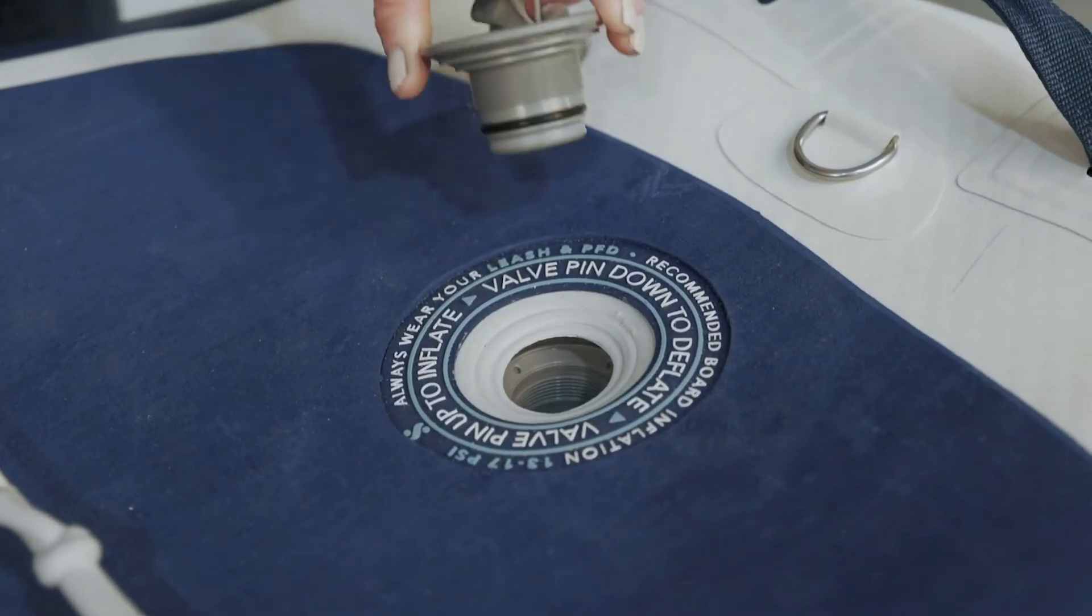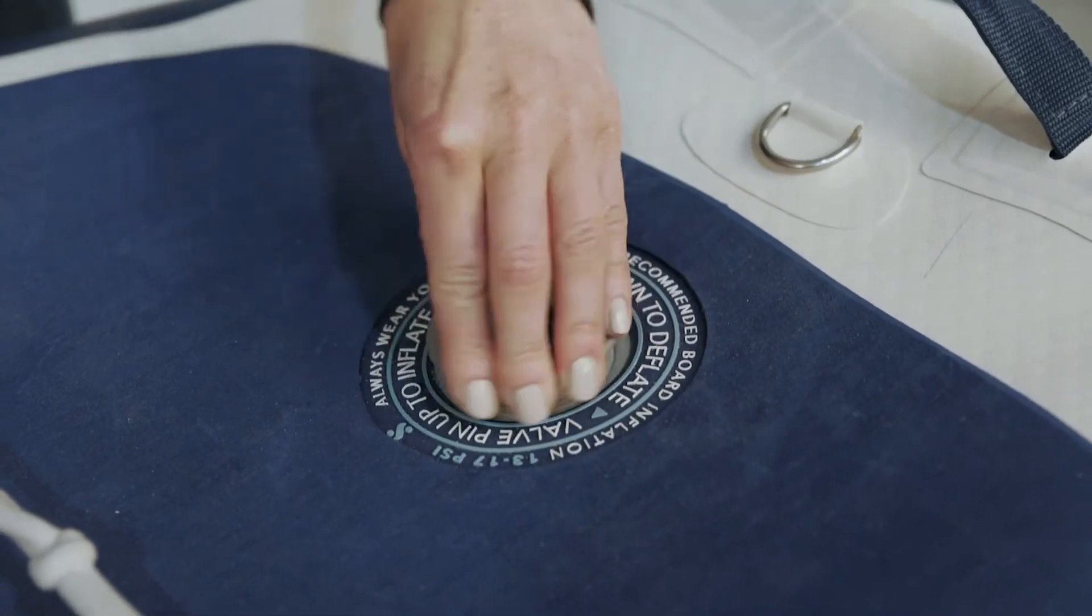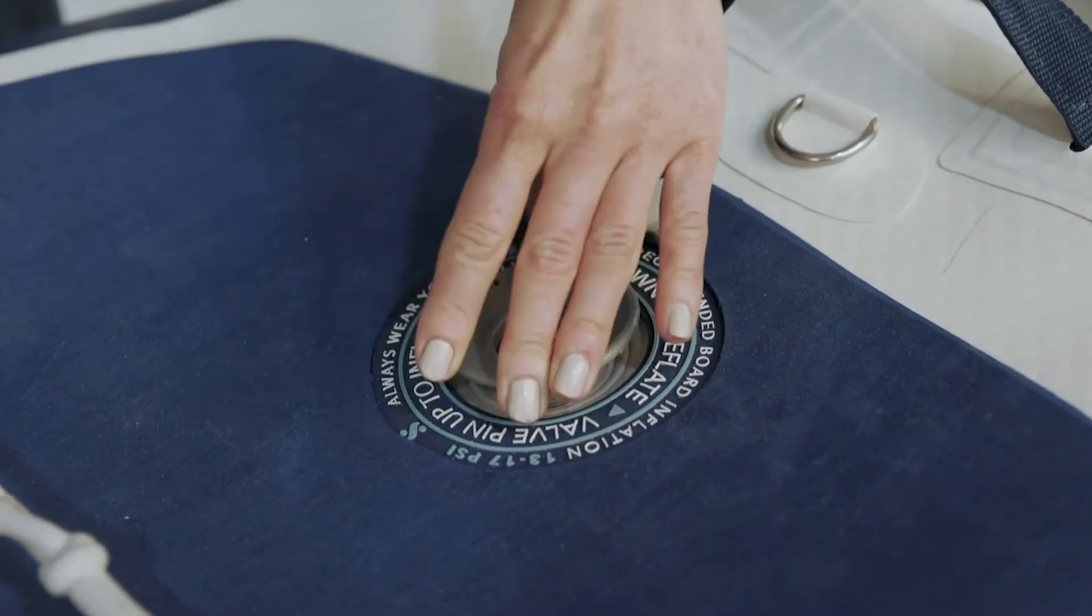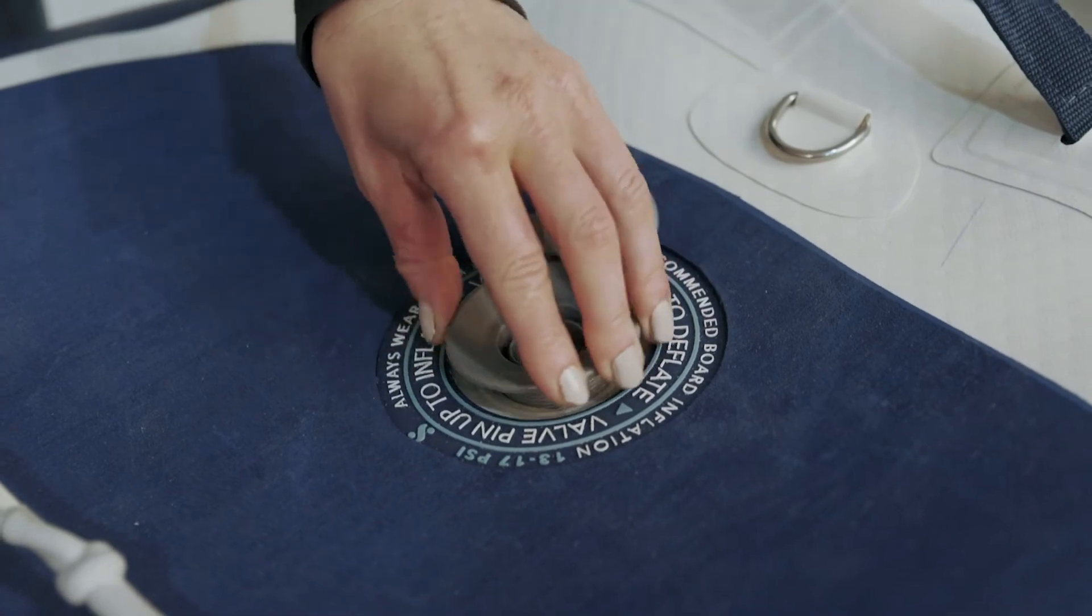Now we'll reattach the new valve. Line the threading of the new valve with the bottom section. You will need to hold the bottom section in place beneath the board. Hand tighten the valve.